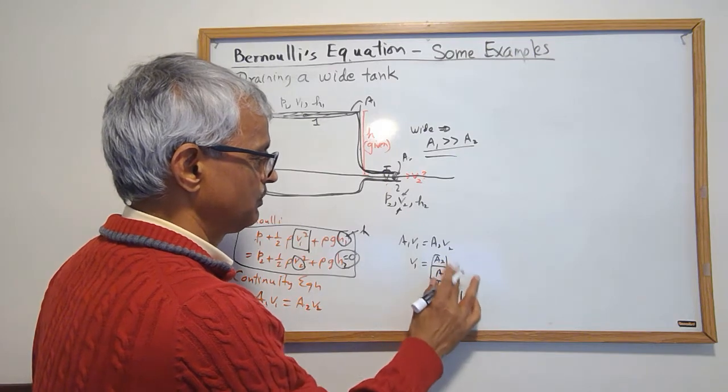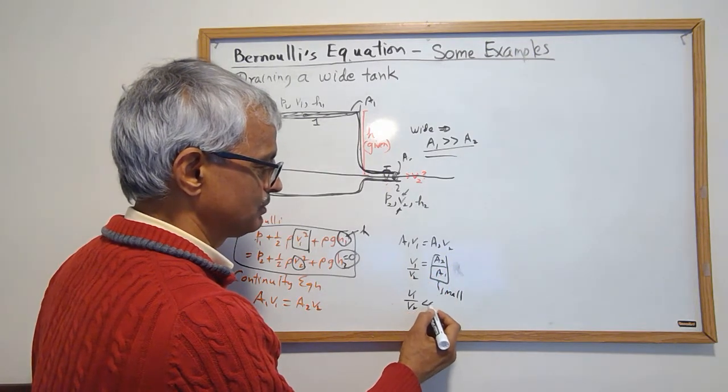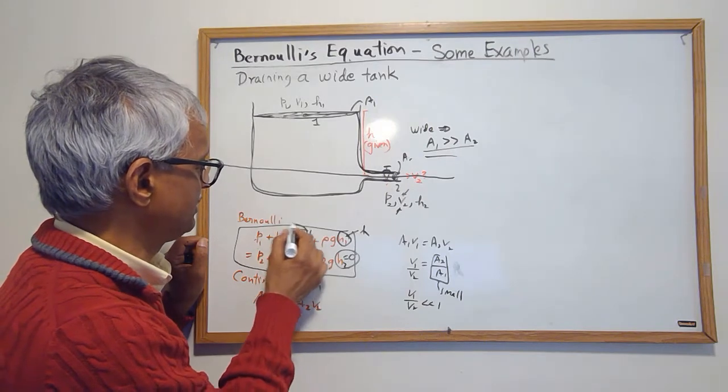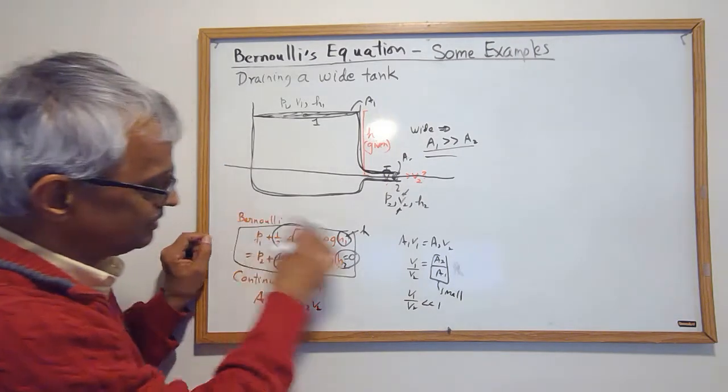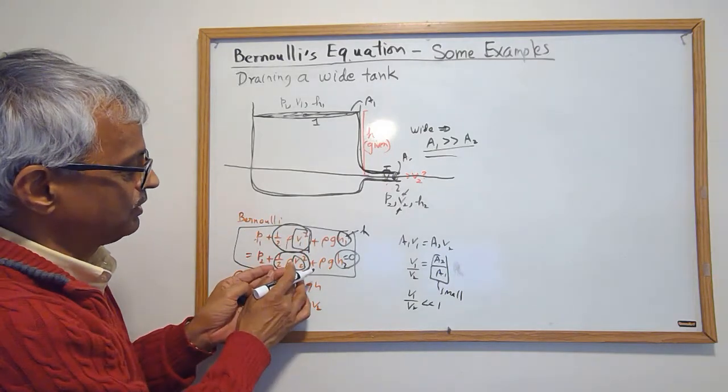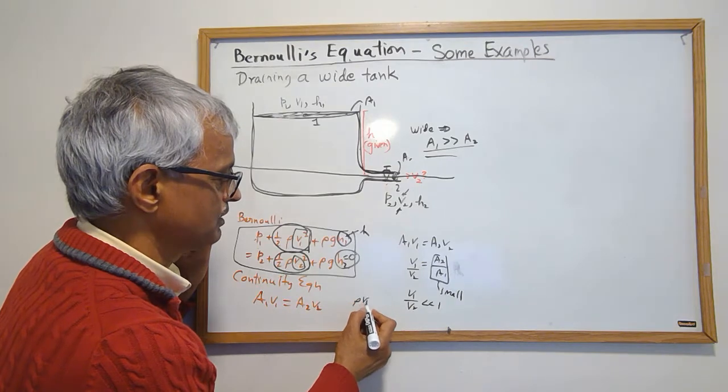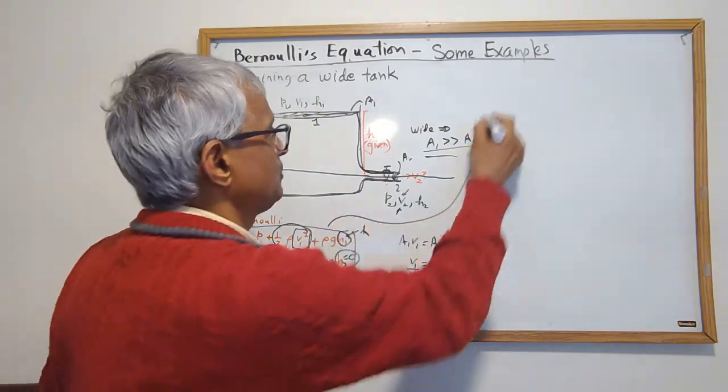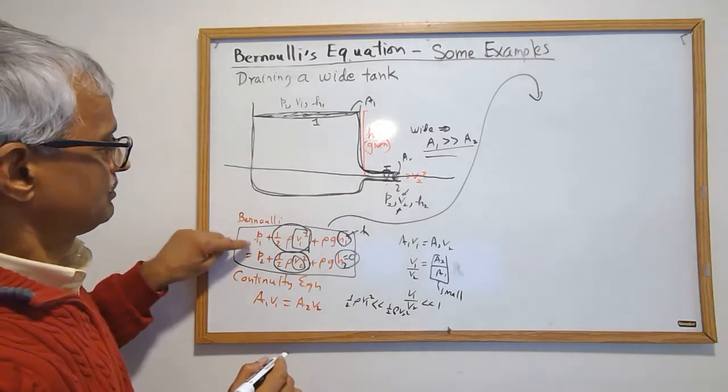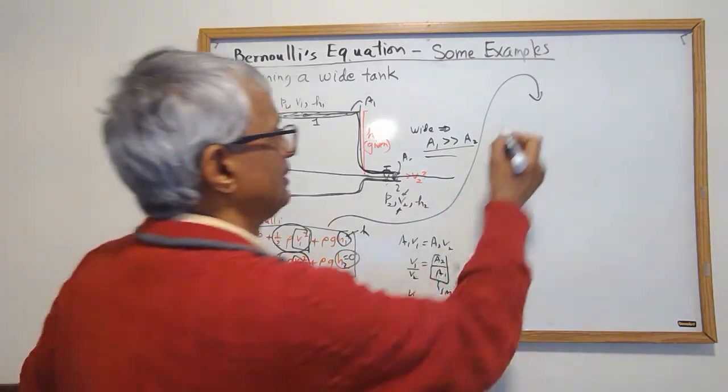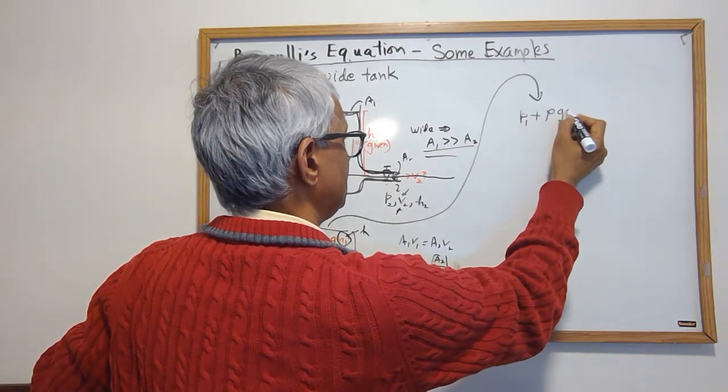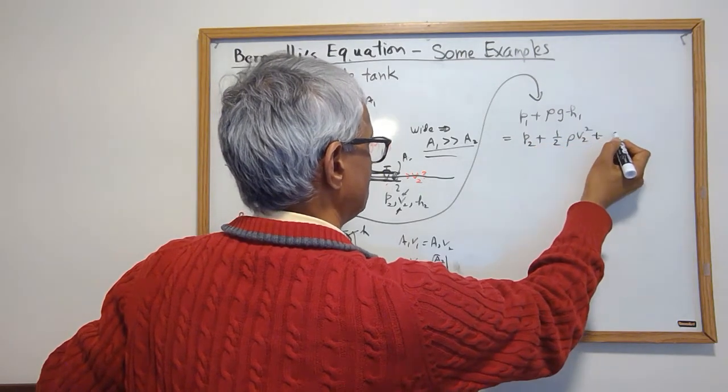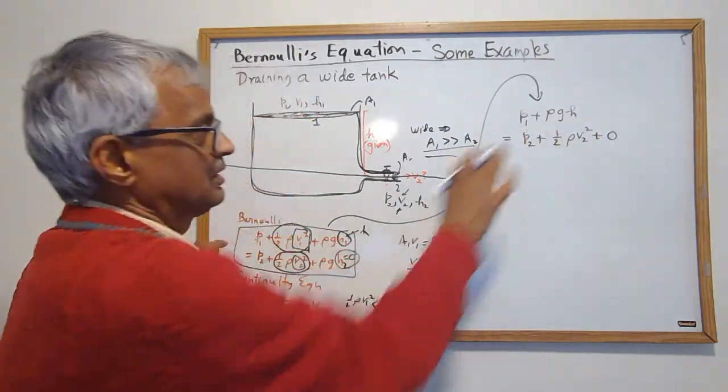So if I look at v1 over v2, v1 over v2 is very small, which means I can compare these two terms. Half rho v1 squared will be much much less than half rho v2 squared, so I can actually ignore that. This equation becomes p1 plus rho g h1 equals p2 plus half rho v2 squared, and h2 is 0, so this equation turns into that.